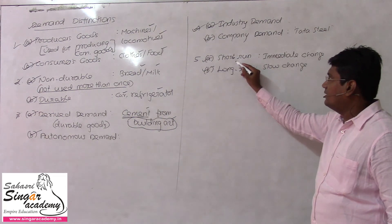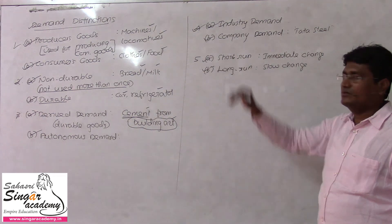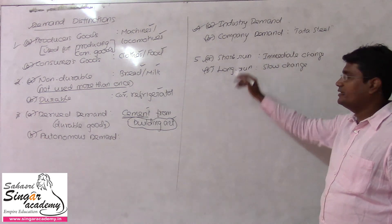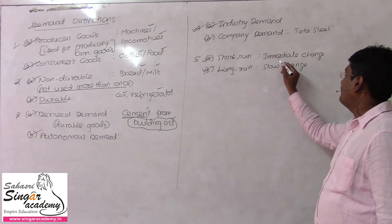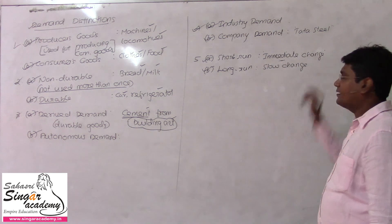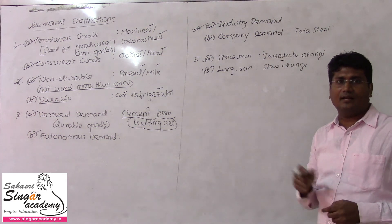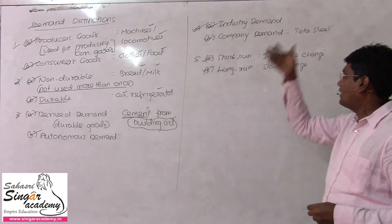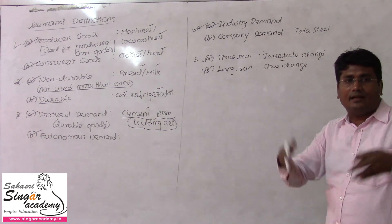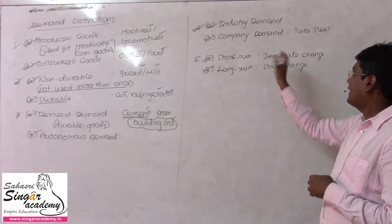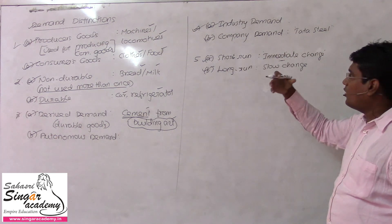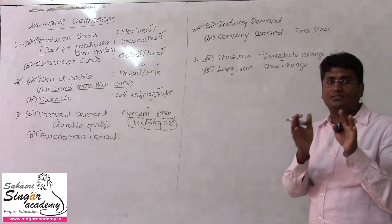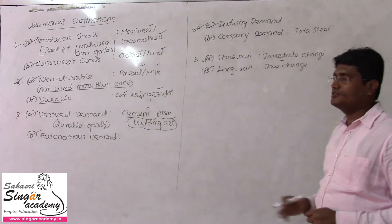For consumer goods like grocery items — probably vegetables — a price change has an immediate impact on quantity demanded. If prices are hiked even once in the evening, demand reduces at once. The impact and change in demand happen immediately.